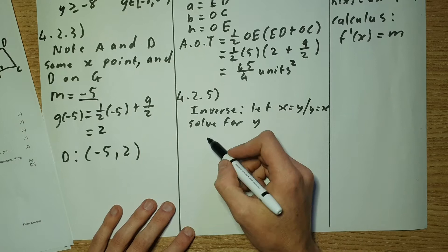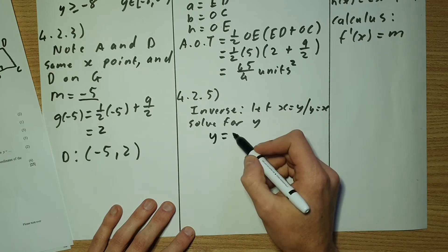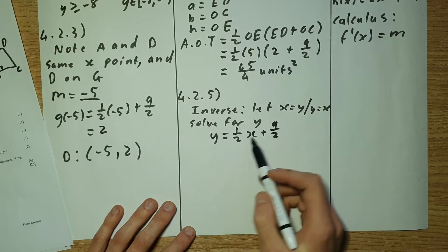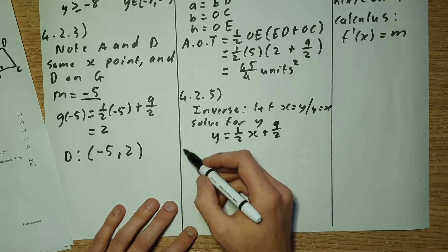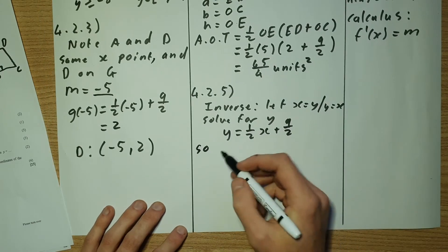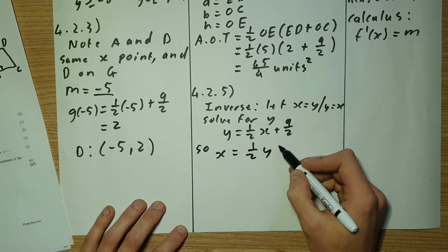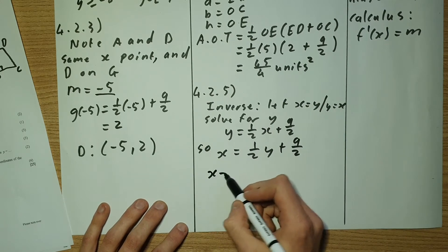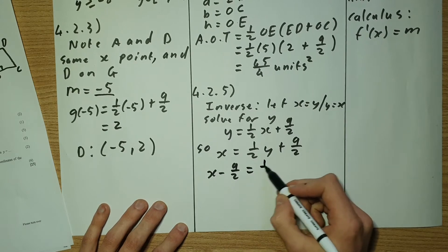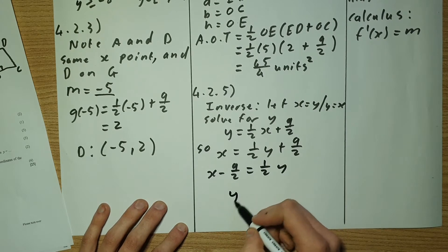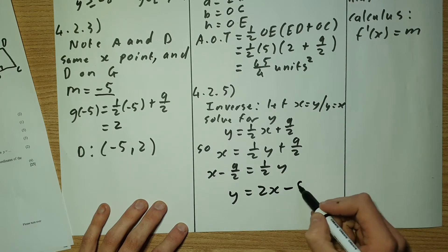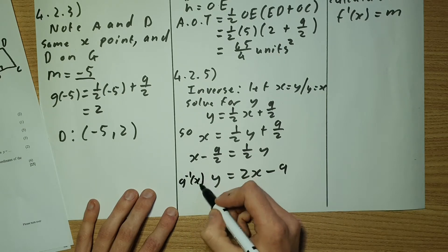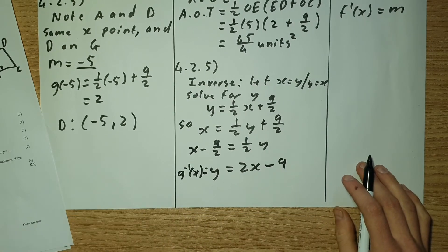What was given is Y equals to a half X plus nine over two. So now I'm going to let X equal Y and Y equals X. So I'm going to have X equals to a half Y plus nine over two. So now we can solve for Y. So that becomes X minus nine over two equals to a half Y. So Y is going to equal to two X minus nine. And that becomes G negative one of X.